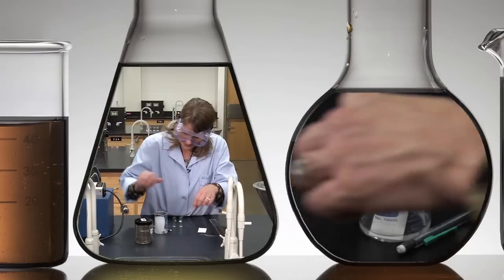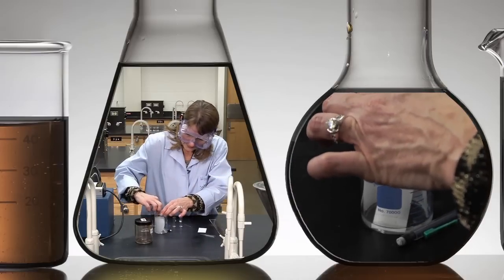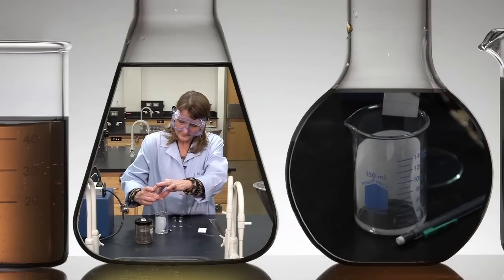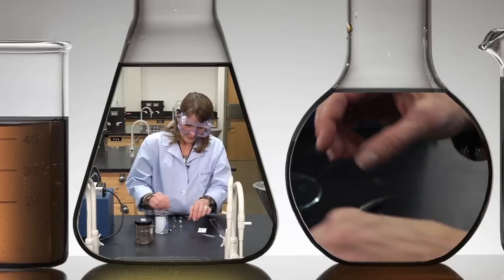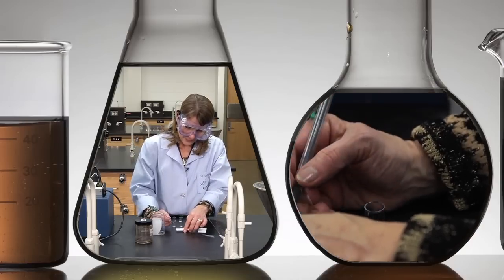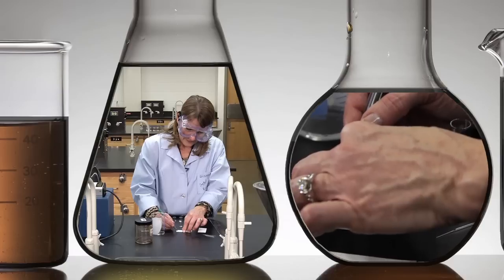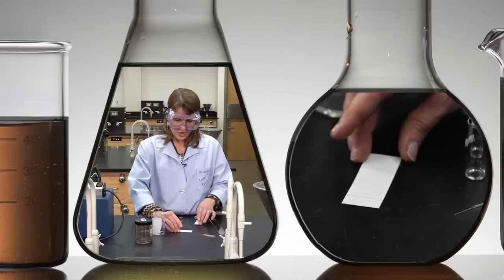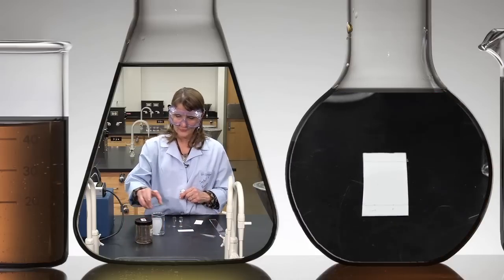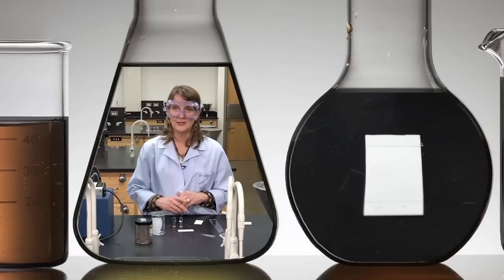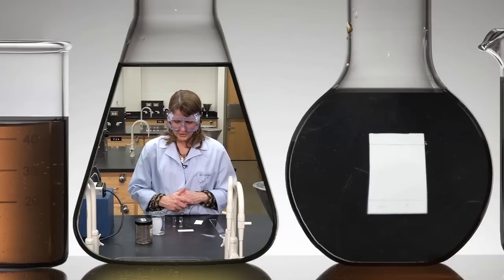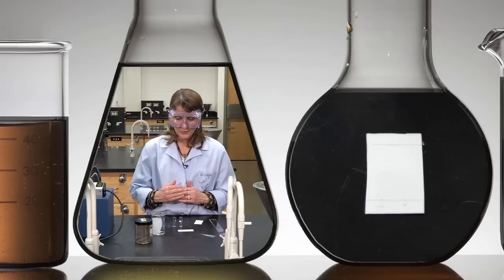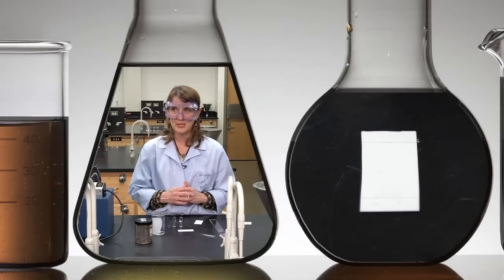You can still see the solvent on it and before the solvent evaporates, you want to mark the solvent front, which is how high the solvent went on the plate. This will be very important for calculating the RF values, which is the ratio between the distance each spot moved from the baseline versus how far the solvent moved from the baseline.